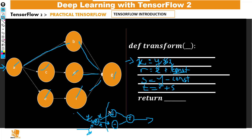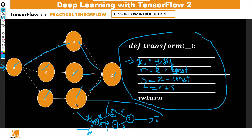This addition takes one input since it's added to the constant, and the subtraction takes one input since the constant is subtracted from x. After the multiplication we have x, and that same x feeds into both branches. So we now have tensor s here and tensor r, and r plus s gives us output t. Under the hood TensorFlow takes the Python code you write and converts it into a graph like this one.